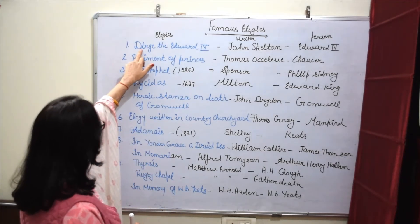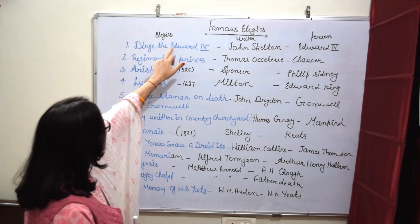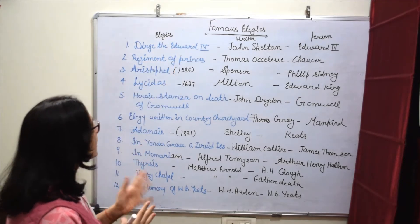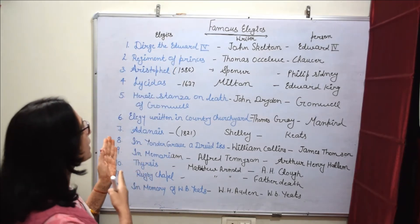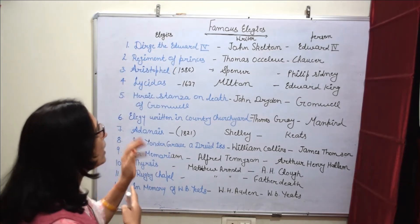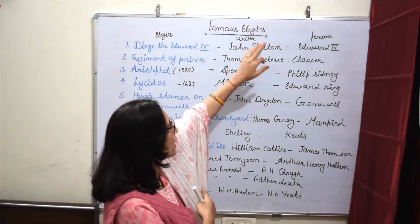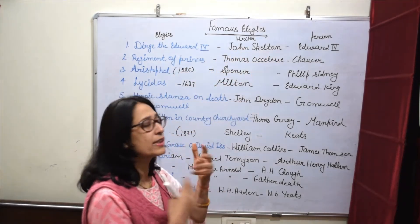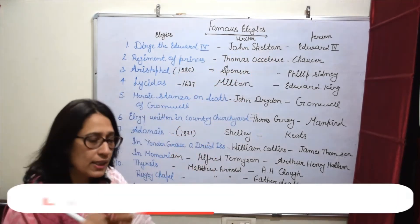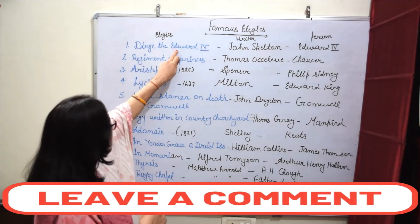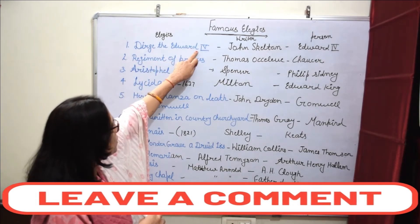The first one is Dyer's Edward IV. What is it? It is an elegy — written on the death of a person. Who is the writer, and who is the subject of the death? So, Dyer's Edward IV — who has written it?